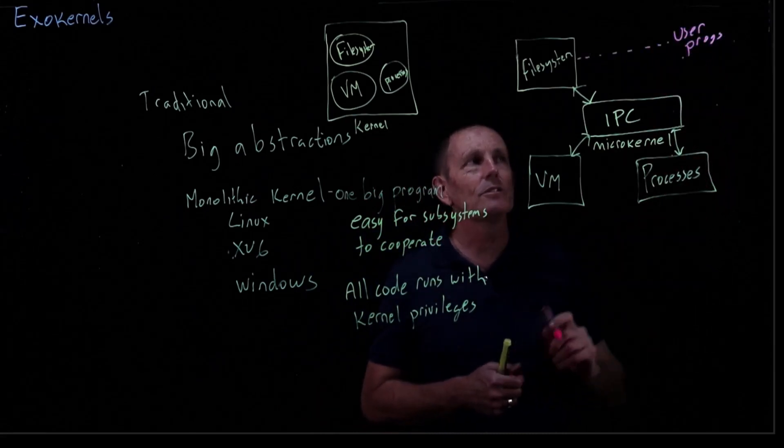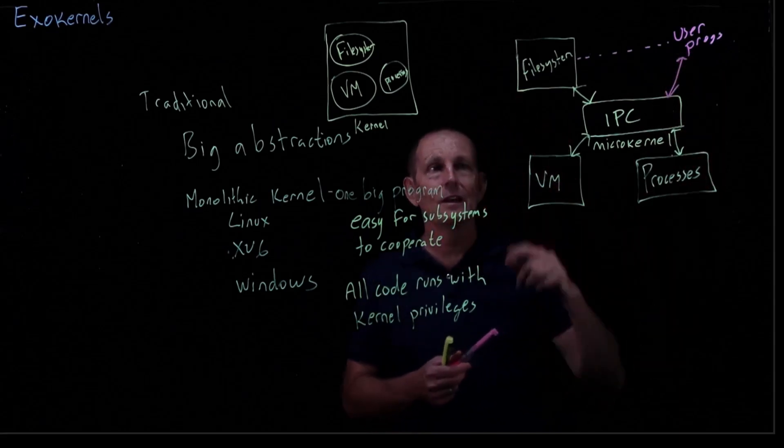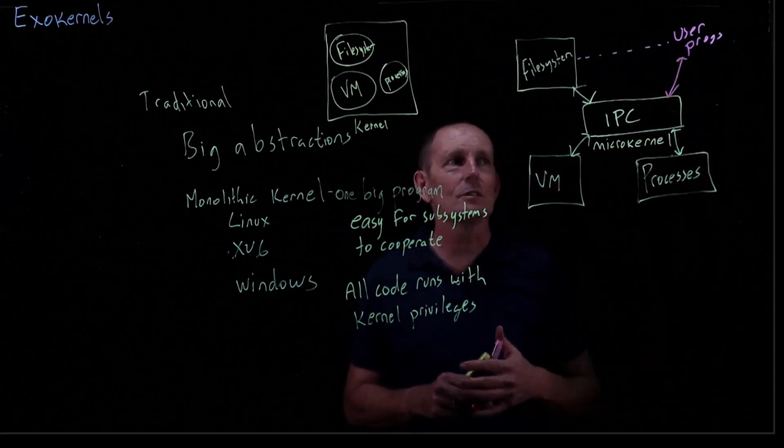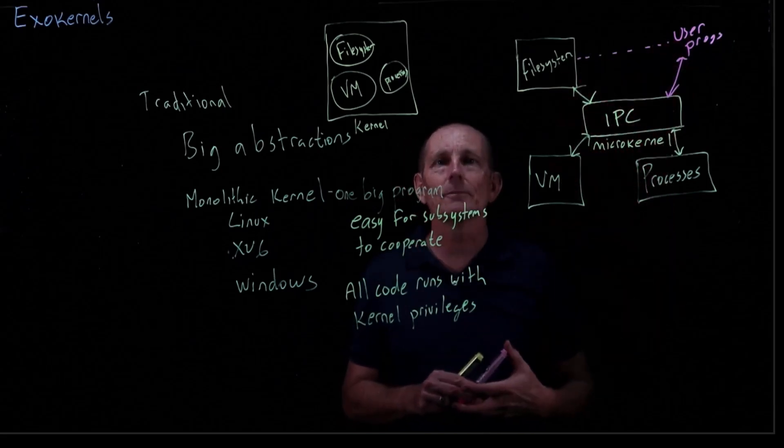Conceptually, the user program is communicating with the file system. The way it actually does it is by communicating with the microkernel. And the microkernel will then allow the communication out to the file system. So we have to use the IPC to arrange communication between the user program and the file system.